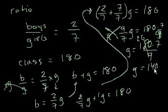And so if there are 140 girls in the room, how many boys are there going to be? Well, we know that the whole class is 180 people. And we know b plus g is 180. So there's going to be, the boys are equal to 40.